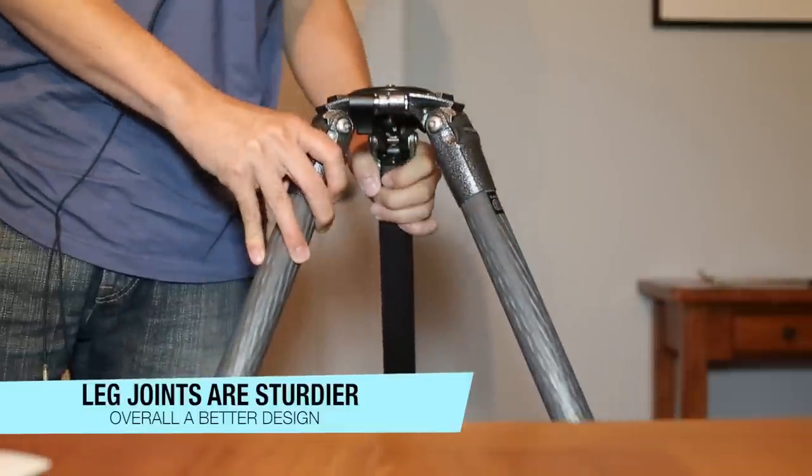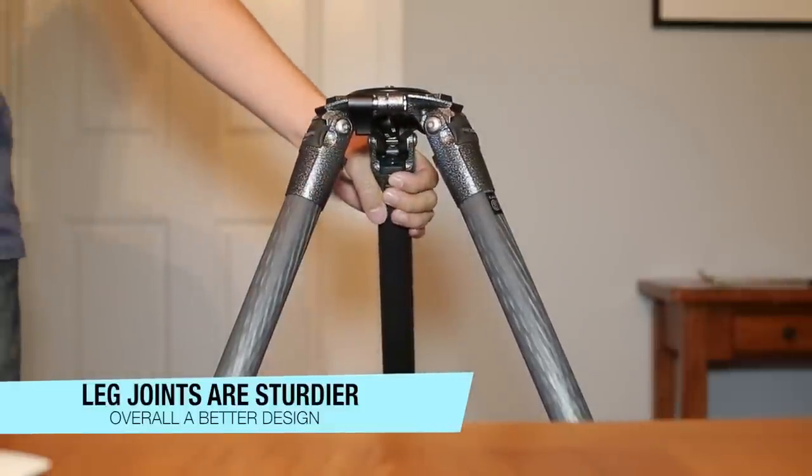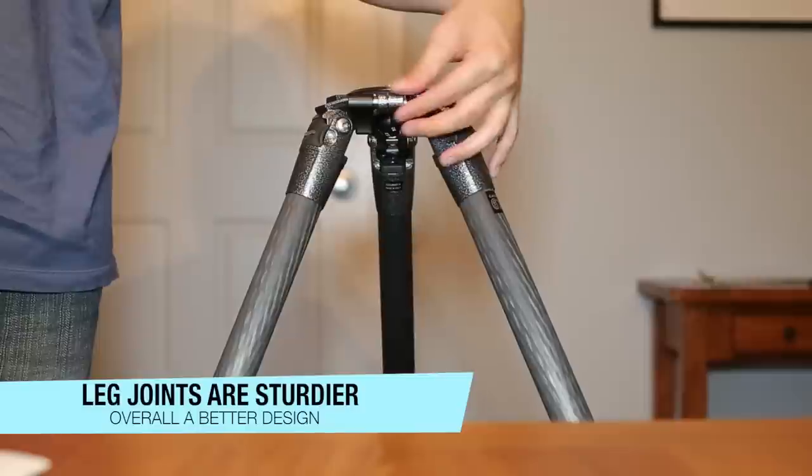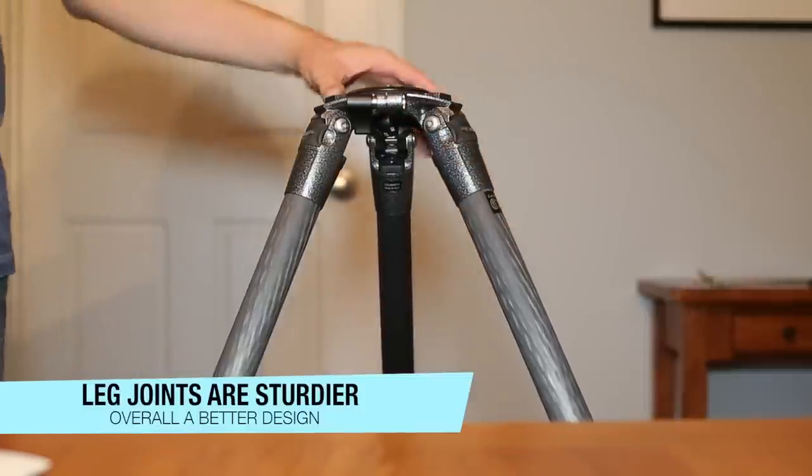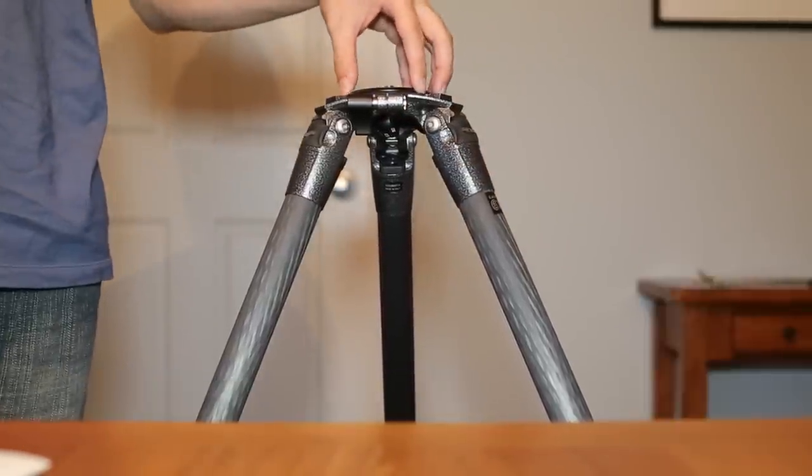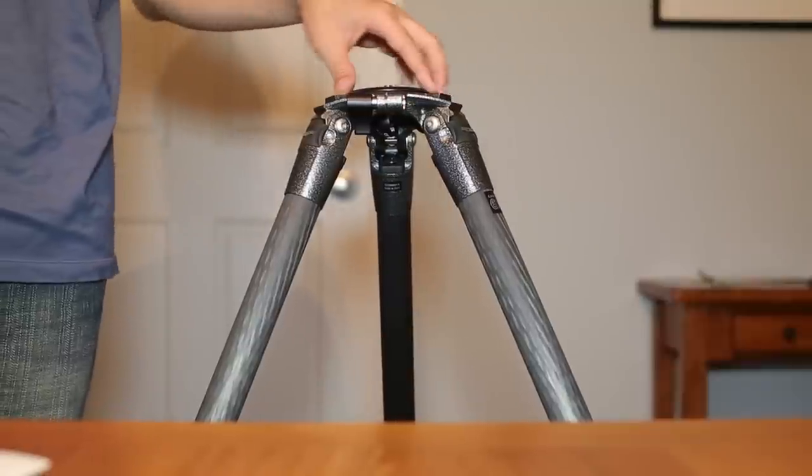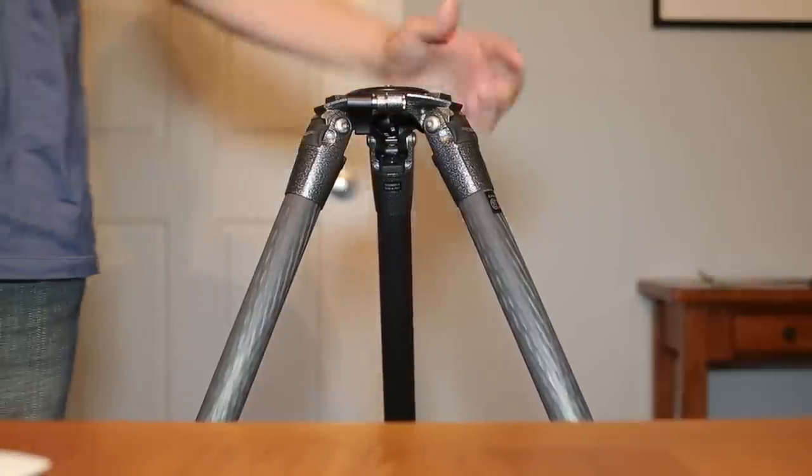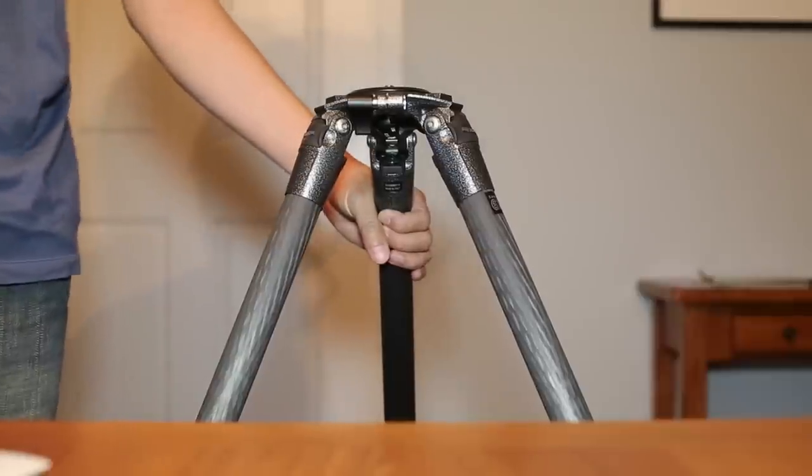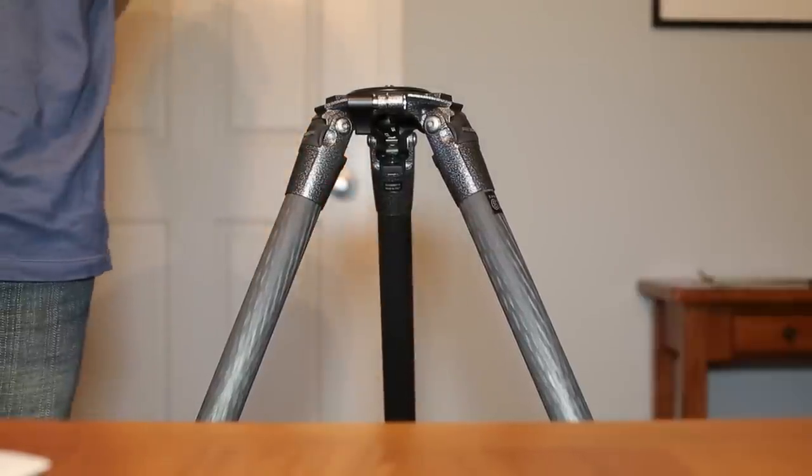The main difference is that in older versions of the tripod, it only had a screw right here that you would tighten or loosen to remove the center part of the tripod. And you had to periodically tighten that before you would go out on shoots because sometimes that would loosen up on its own.